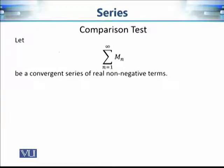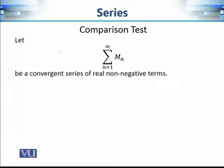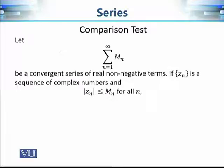Let's state precisely what the comparison test is for complex series. Given a convergent series of non-negative real numbers Mₙ — this is the series we want to compare with our given complex series — if the moduli of the terms of our given series satisfy |zₙ| ≤ Mₙ for all n, then the given series of real numbers is in a sense larger than our given complex series.